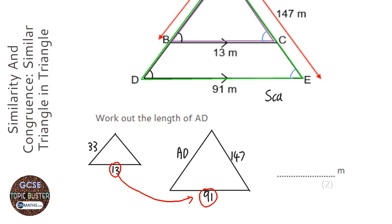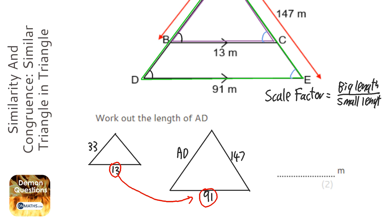To work out a scale factor, we do big length over small length. And the two lengths need to be corresponding, which means they're the same place in both of the triangles. So we've picked the bottom ones in both the triangles, so it's 91 over 13.